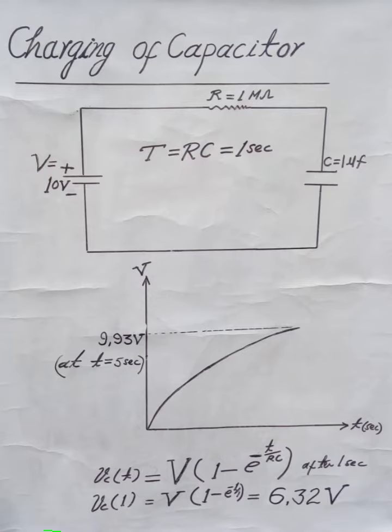Charging of a capacitor: one capacitor of one microfarad connected to a 10 volt power supply through a resistor R of 1 megaohm. The time constant T equals RC, which equals one second for this circuit. The charging time depends on the time constant of the circuit.